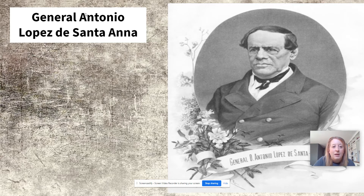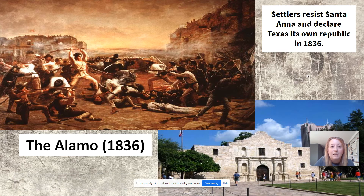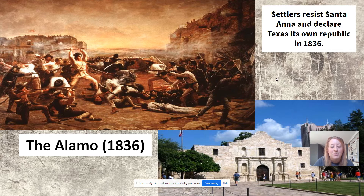He wanted to make sure that the Americans in Texas were following the rules and knew their place. And when he created a new constitution that would have alienated the Americans in Texas, there was a call for war against Mexico by the Americans in Texas. There were kind of two factions: Sam Houston led a faction of men who believed in resistance and war — there are more Americans in Texas, it should belong to us — while Stephen Austin called for negotiations and peace.